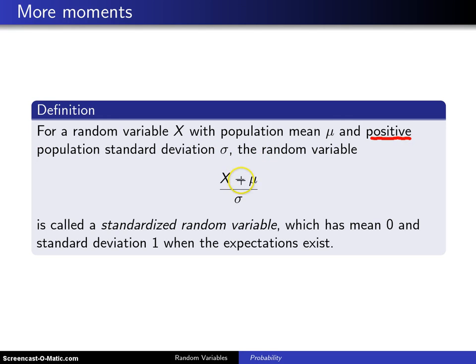the random variable x minus mu divided by sigma is called a standardized random variable which has mean 0 and standard deviation 1 when the expectations exist.